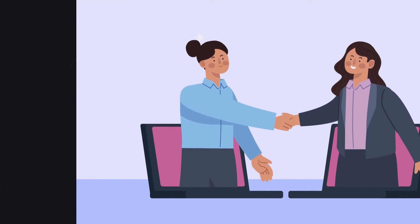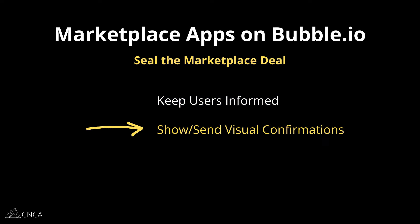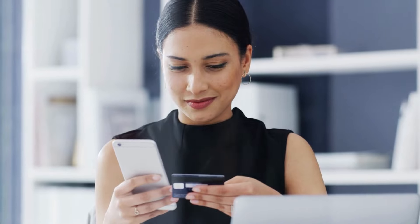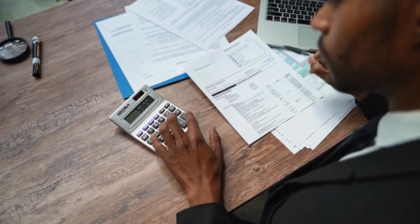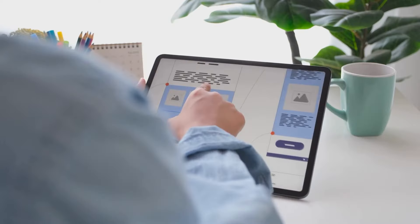Finalizing the marketplace connection will typically involve transactions and confirmations sent to everyone involved, plus database updates to create documentation around the transaction, track statuses, or remove the listing from the marketplace. Once a transaction is processed, show a confirmation message, send a confirmation email to both parties, and display a record of the transaction in their dashboards. This is especially true if money is involved — no one wants to lose track of their funds. This is the area you want to stress test the most because commitments have been made.